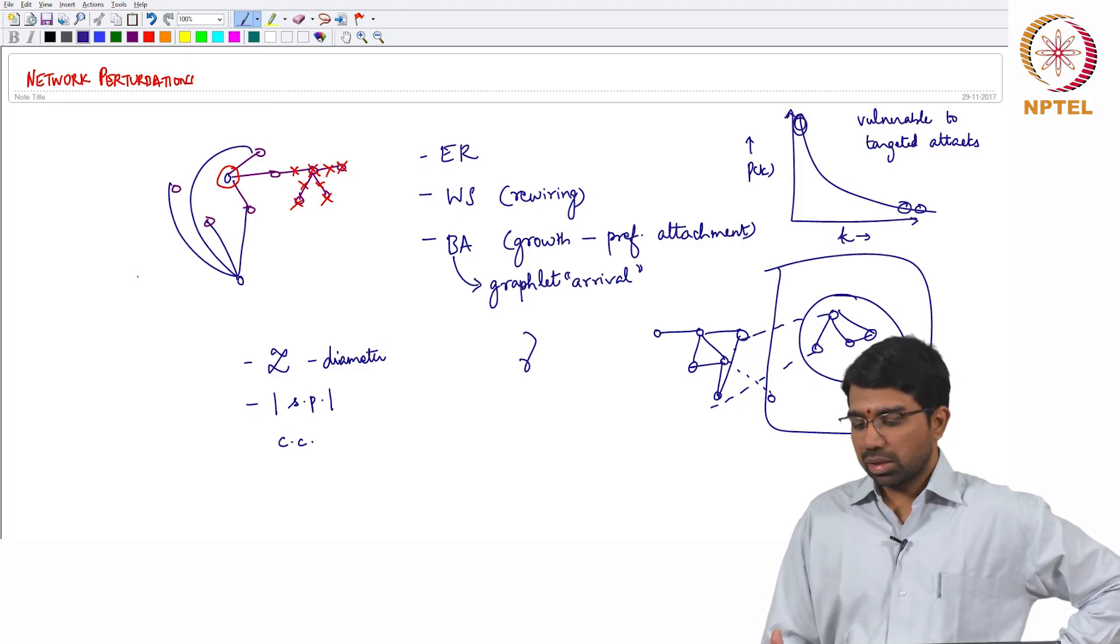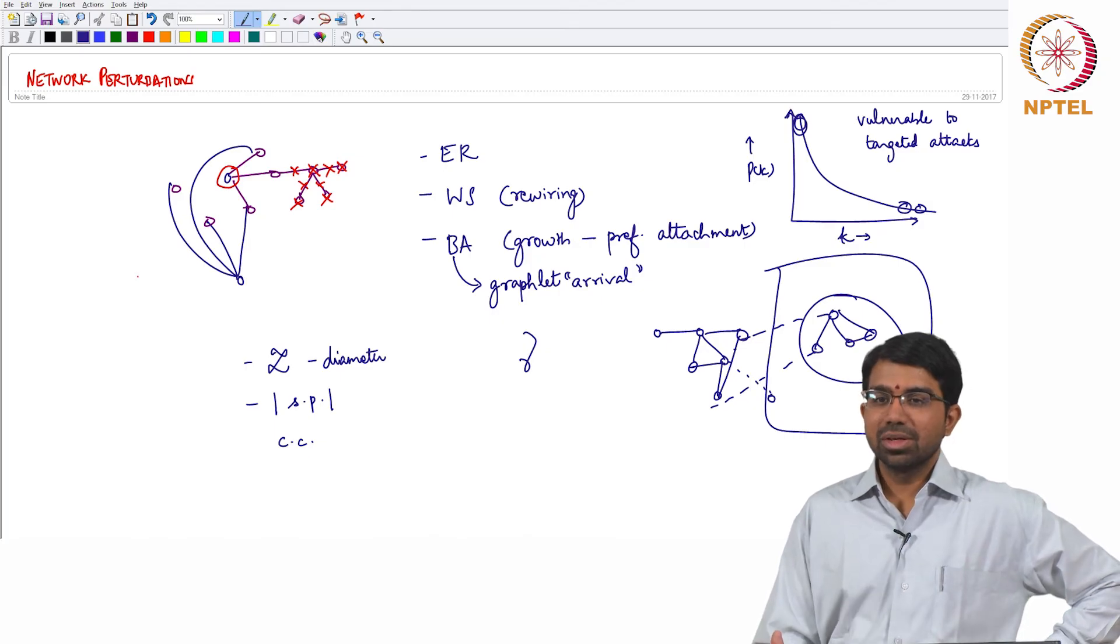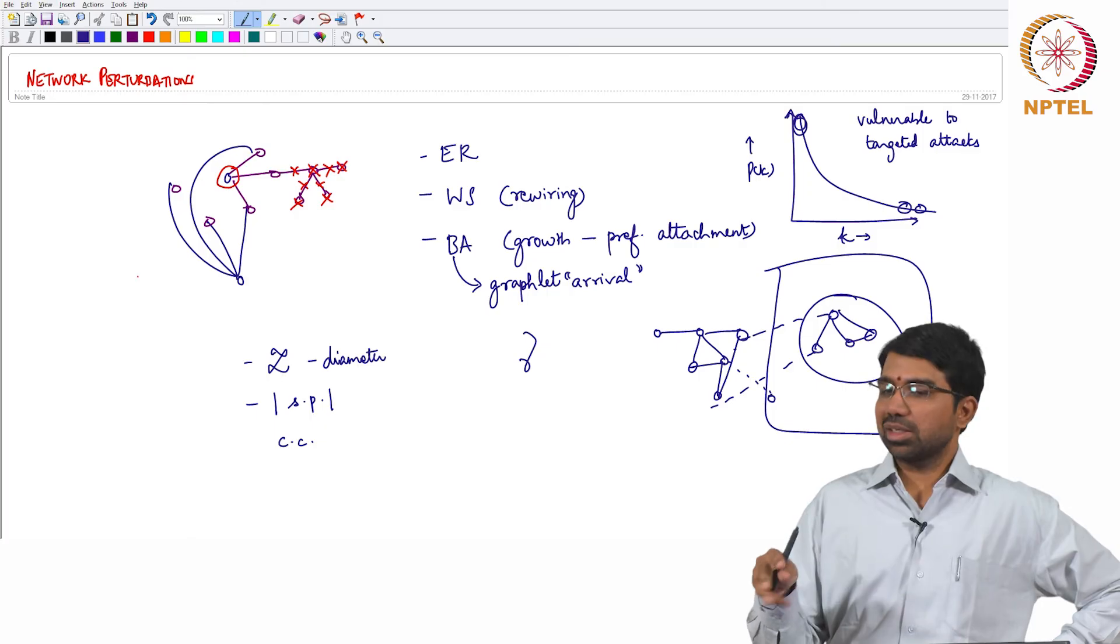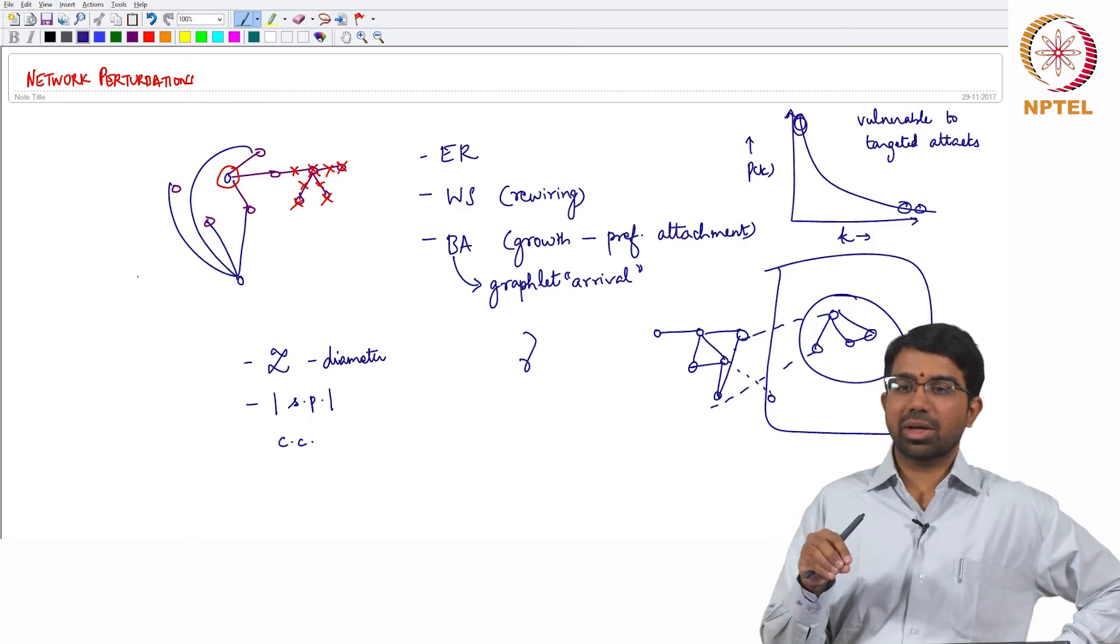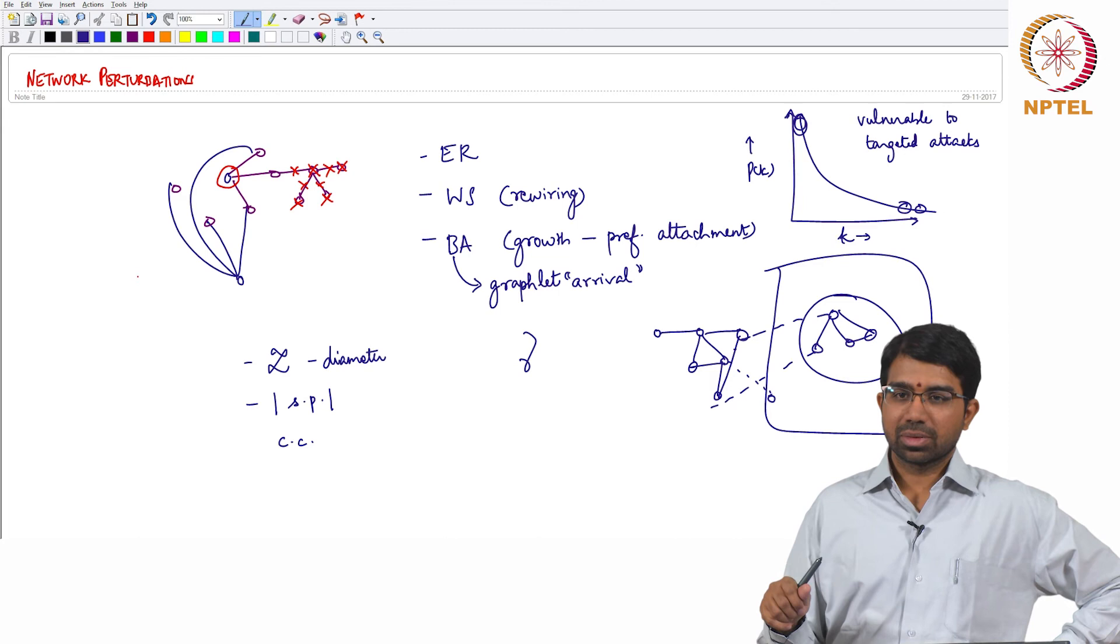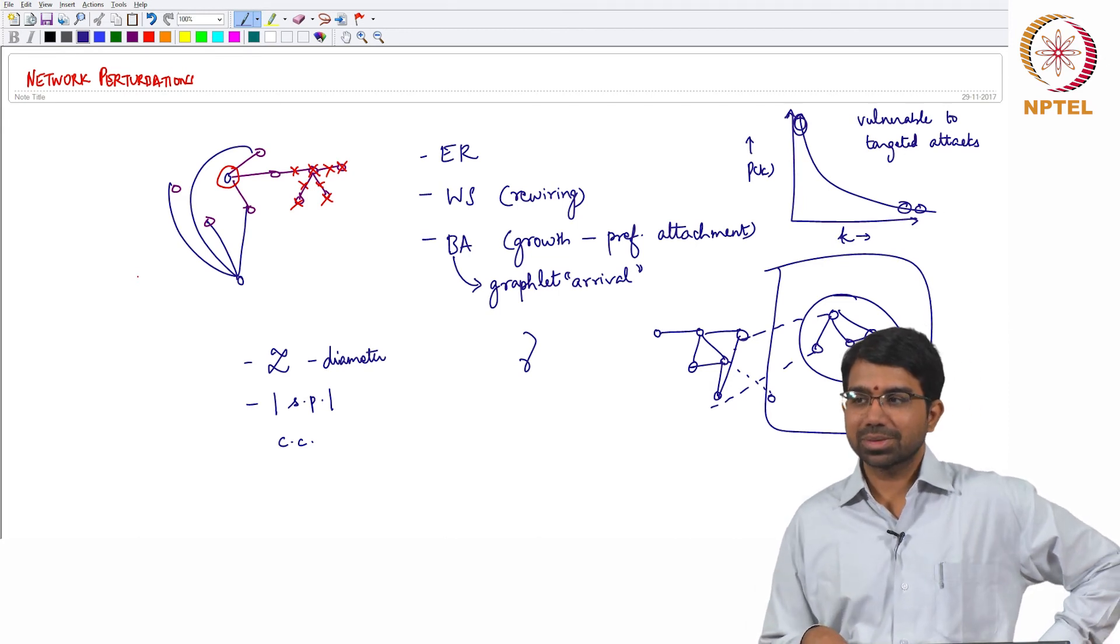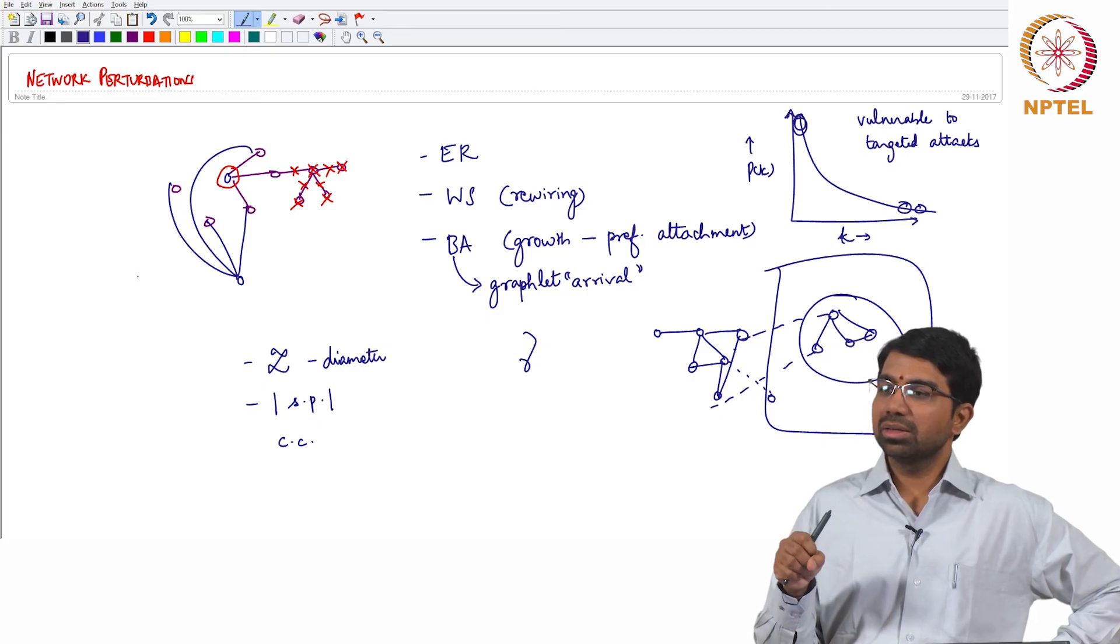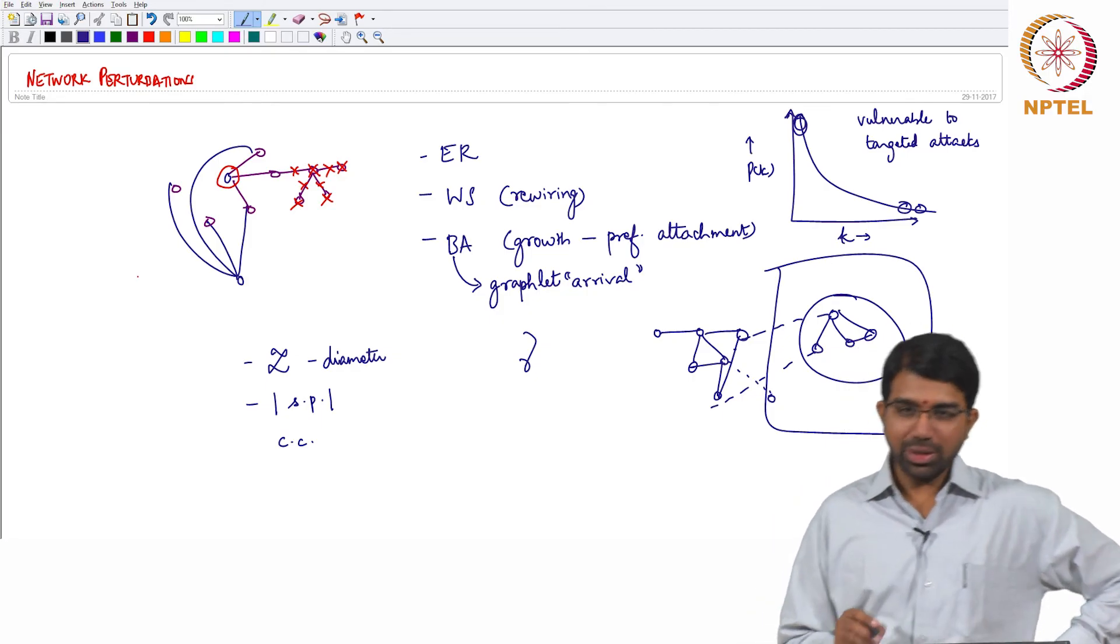Whereas in a random network, there is not much connectivity to begin with. So when you start knocking out, it slowly starts disintegrating. The characteristic path length will slowly increase. Increase or decrease? It will increase. Diameter will again increase. So that's a fair point.